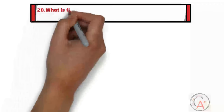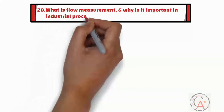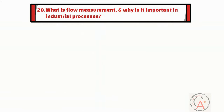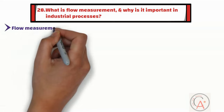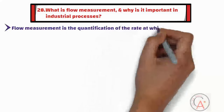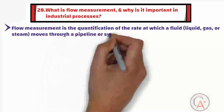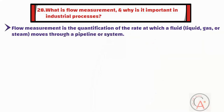The twenty-eighth question is: what is flow measurement and why is it important in industrial processes? Flow measurement is the quantification of the rate at which a fluid such as liquid, gas, or steam moves through a pipeline or system. It is crucial for process control, quality assurance, and resource management.